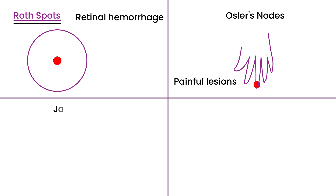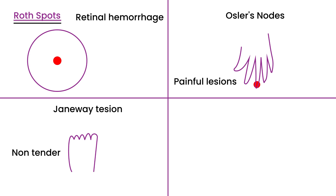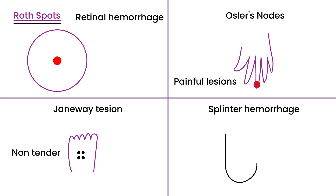The third finding is a Janeway lesion, which is also a skin lesion that can be found on the feet. Unlike Osler's nodes, Janeway lesions are non-tender and represent an area of necrosis — they can appear black because they represent dead dermis of the skin. Finally, splinter hemorrhages refer to tiny blood clots that run vertically under the nails, which you can see when examining the fingernails.